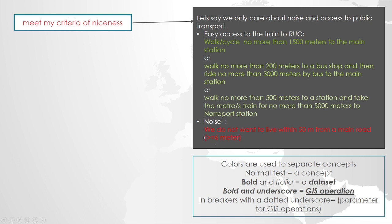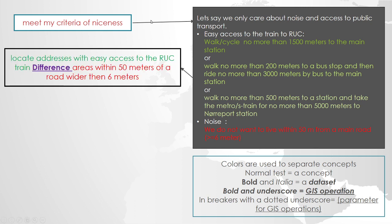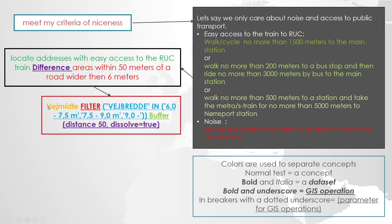Finally, you do not want to live along a wide road — a road more than six meters wide. So those are the criteria we want to solve. Basically we need to do a difference of the good places and the bad places. We can identify the bad places because we know the road width attribute, so we can filter on it and then do a buffer on that.